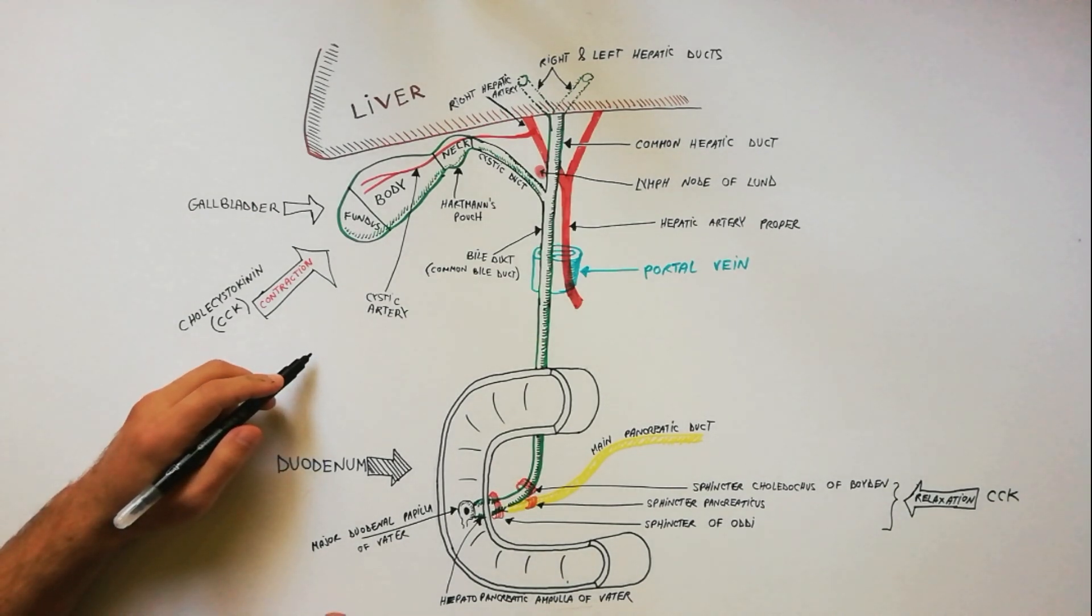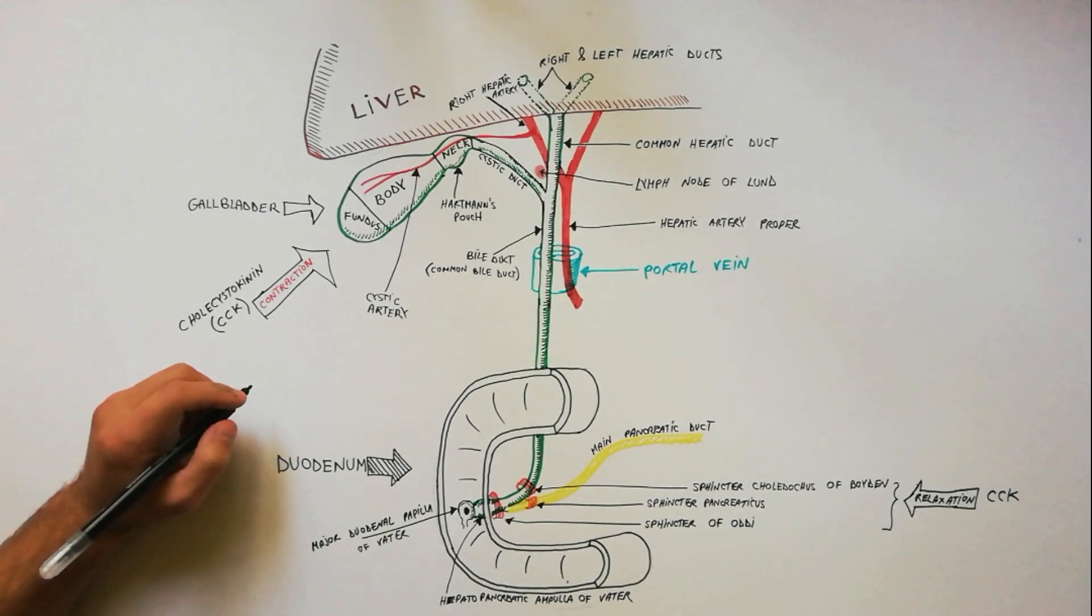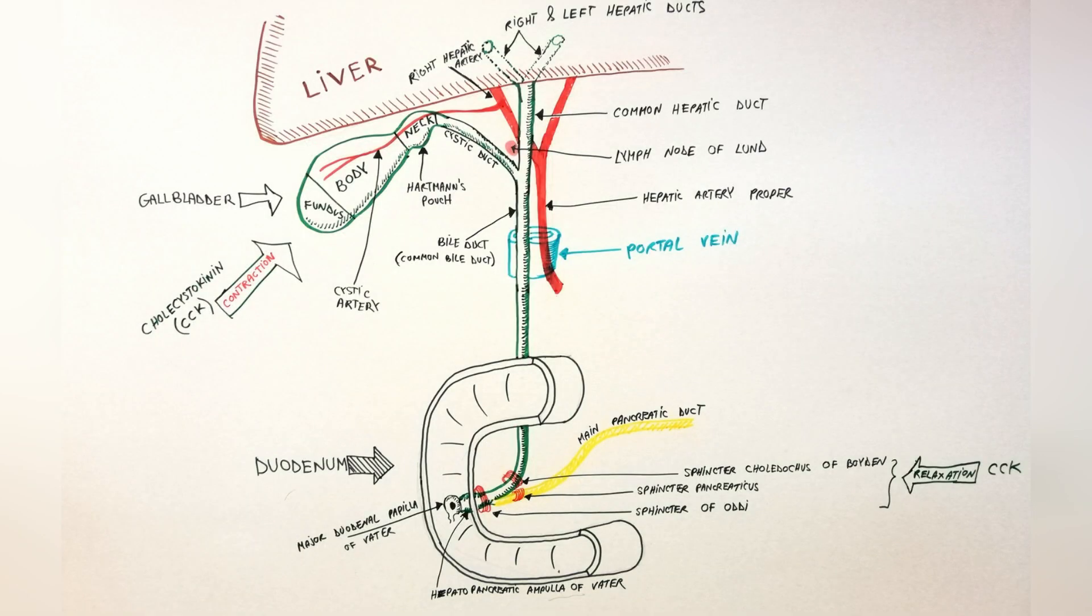The cystic node of Lund, present in the apical part of this triangle, receives most of the lymph from gallbladder and is constantly found enlarged in cholecystitis.